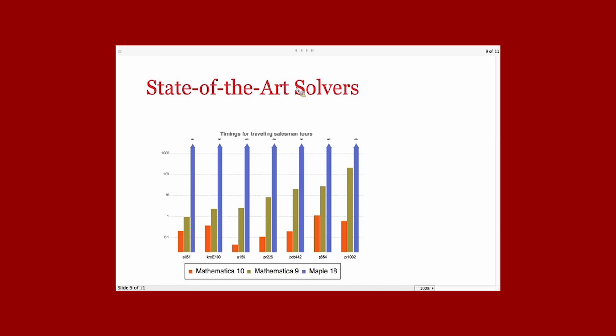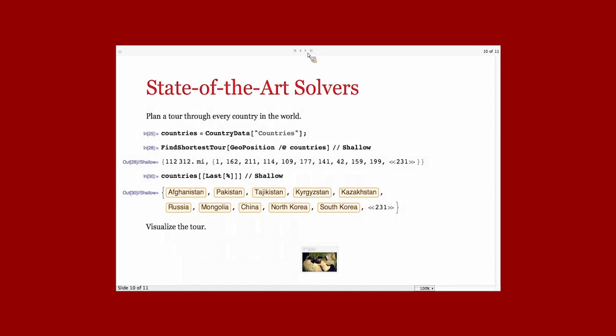What we did behind the scene is we added a state-of-the-art algorithm to allow you to compute FindShortestTour on really large networks. You can look from this graph at the difference in speed. From seconds and hours we had in earlier versions, we do that now in seconds. We integrated it more with the new functionality we have in geographic.